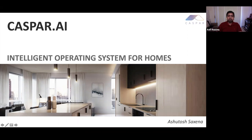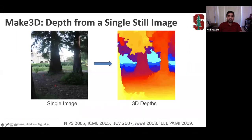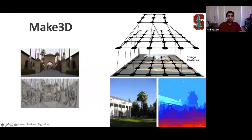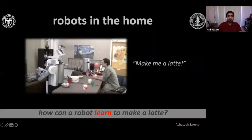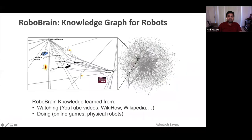Dr. Saxena received his PhD in 2009 in computer science from Stanford University with Andrew Ng. He was an assistant professor in the department of computer science at Cornell University. At Cornell, he also founded Robo Brain, a joint venture between Stanford, Berkeley, Brown, and Cornell to develop a knowledge engine that allows robots to learn from internet videos and share their learning in the physical world with each other.